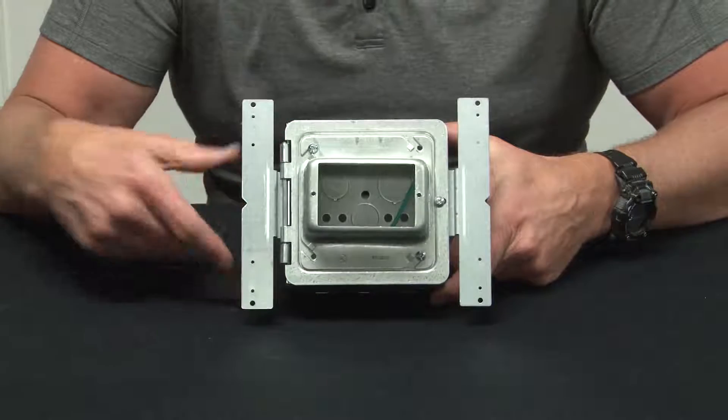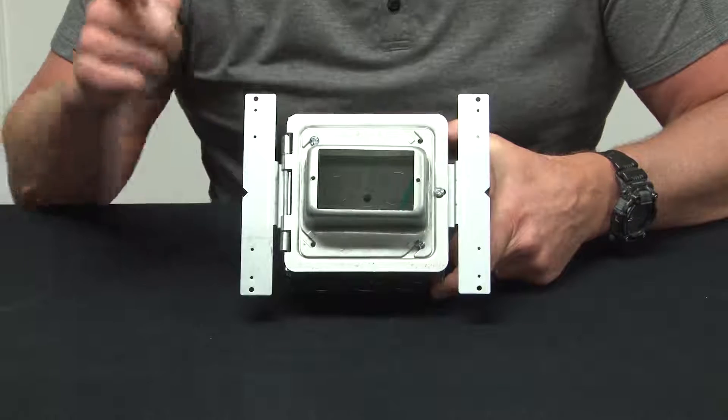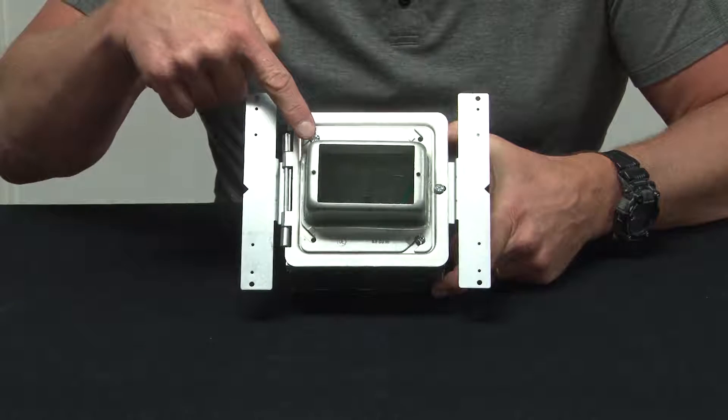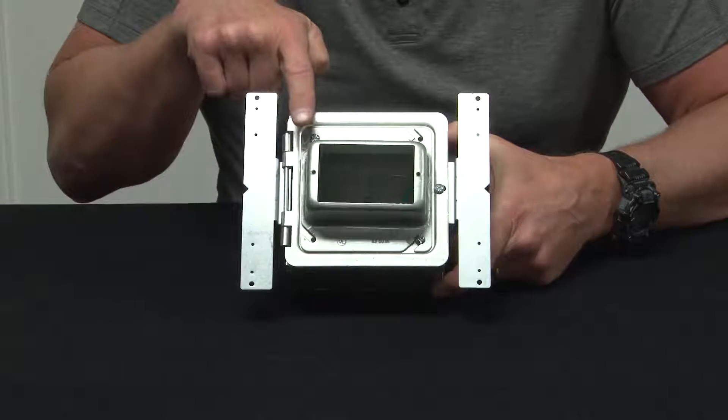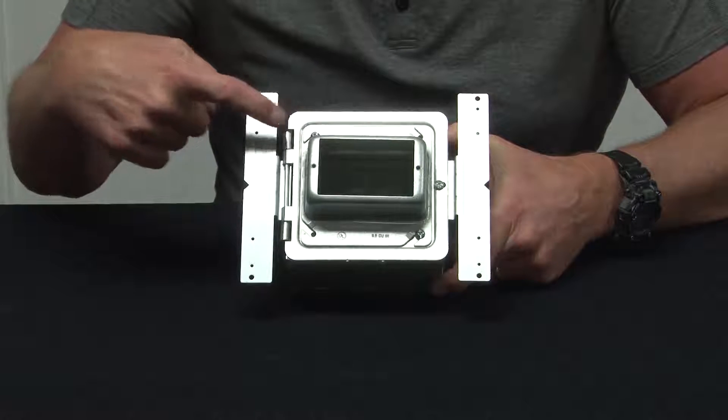Garvin Industries' new hinged prefab box with angle brackets is designed to be used on wall studs and comes complete with a one-gang device ring that can be mounted both horizontally or vertically by attaching it to the hinge door.